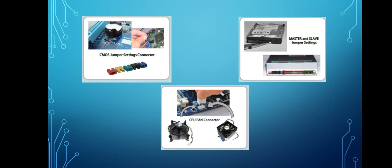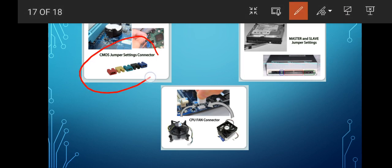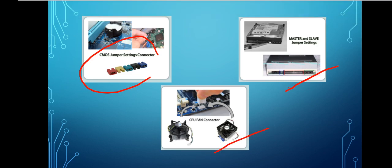Next is your chassis fan connector. After that is your CMOS connector and your jumper settings connector, which allows master and slave configuration connections. Finally, there is your CPU fan connector. Those are the ports, sockets, slots, and connectors that can be seen in your computer system.